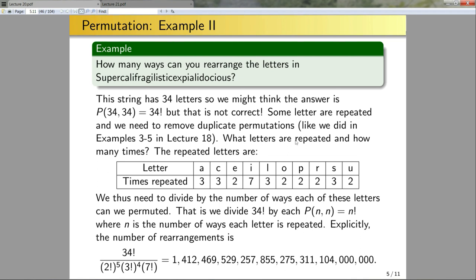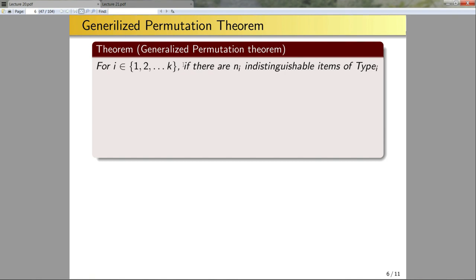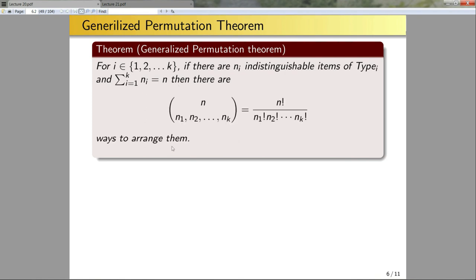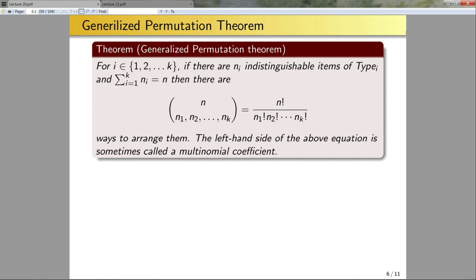We can formalize this as the Generalized Permutation Theorem. For i = 1 up to k, if there are n_i indistinguishable items of type i, and the sum of all n_i equals n, then the number of ways to arrange these items is n! divided by the product of each n_i factorial. The left-hand side expression is sometimes called a multinomial coefficient. We won't do much with multinomial coefficients, but we will work with binomial coefficients.